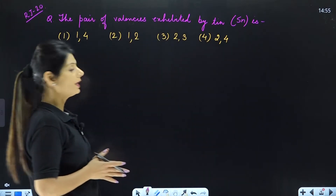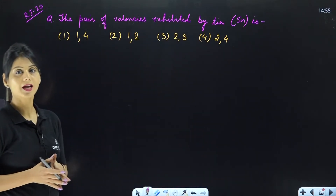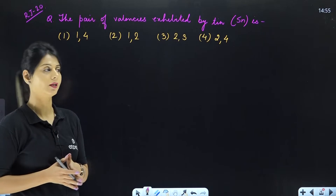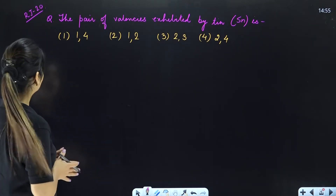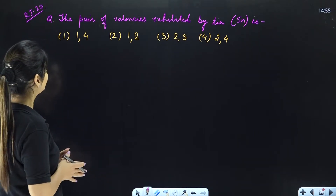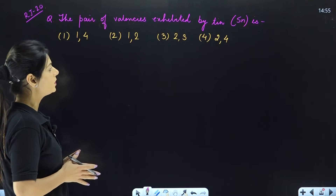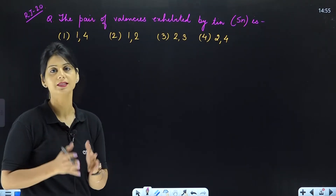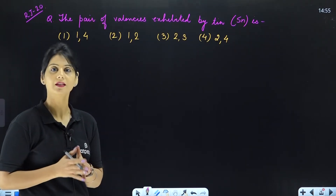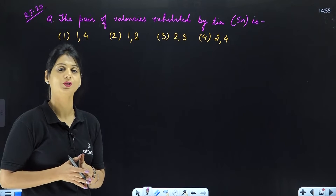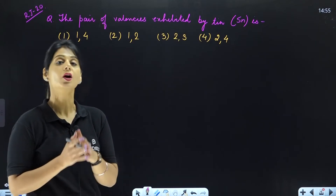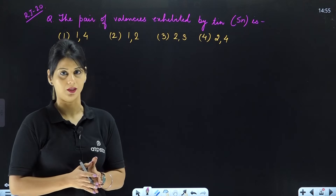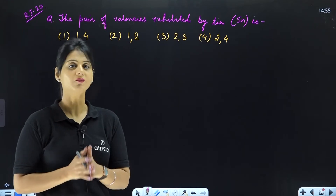This question is asked in NSTC Stage 1, 2020. The question says: the pair of valencies exhibited by Tin is. So you are given some valency options. There is a question about Tin and it is asking which pair of valencies is applied to Tin. So you have studied the concept of valency.